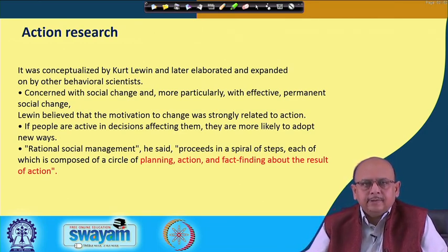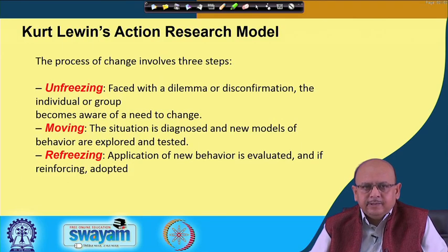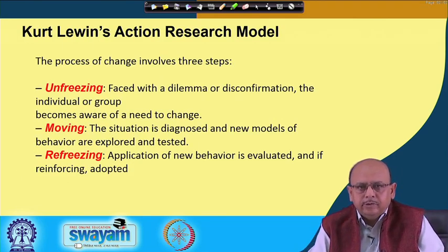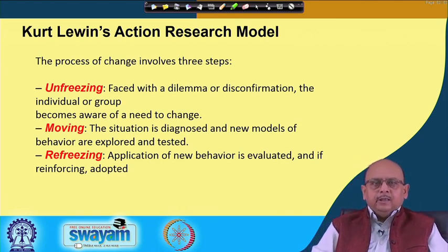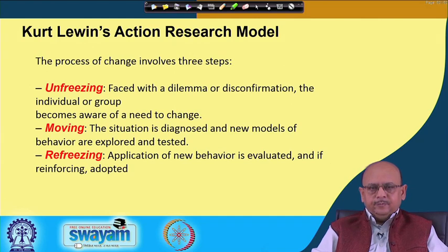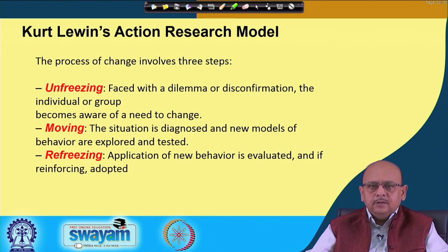If things have improved, it means that you have acted properly, and the result of this action is more affirmative or positive in nature. Lewin suggests a model which is very common and widely understood. He talks about three different stages. The first stage is known as unfreezing, the second stage is known as changing or moving, and the third stage is known as refreezing.